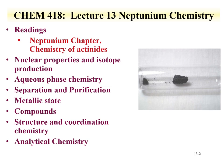The neptunium chapter from the chemistry of the actinides is the reading for this lecture. This lecture is going to cover nuclear properties and isotope production of neptunium, focusing on neptunium-237 since it's the longest-lived isotope and available in the largest quantities in which chemistry can be performed.